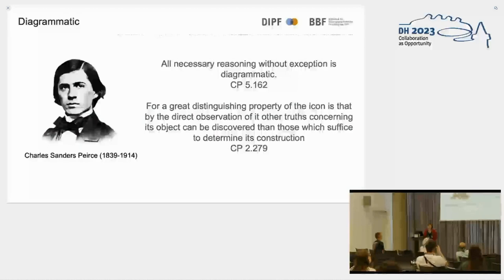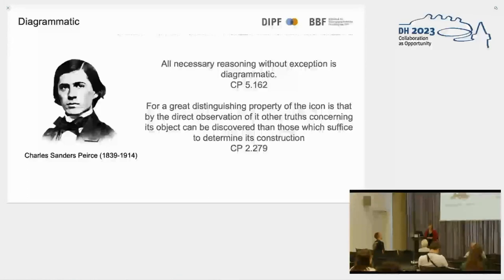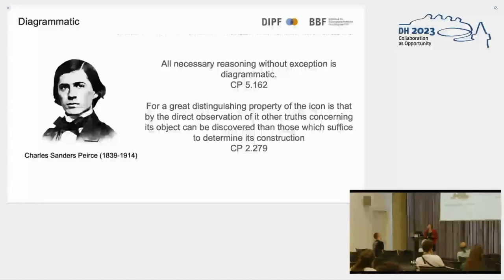Charles Sanders Peirce, the American philosopher, took imagery in his philosophy very seriously. He says that all necessary reasoning without exception is diagrammatic, meaning there is a spatiality in thinking — a spatial structure — so he has a very broad understanding of imagery. A second quote from Peirce's collected papers refers to the main property of an icon sign, which a visualization actually is: by the direct observation of an icon sign, other truths can be discovered. That is the main theoretical foundation of visualizations — that through observing relations and an overview of context, new thoughts and discoveries can be made.